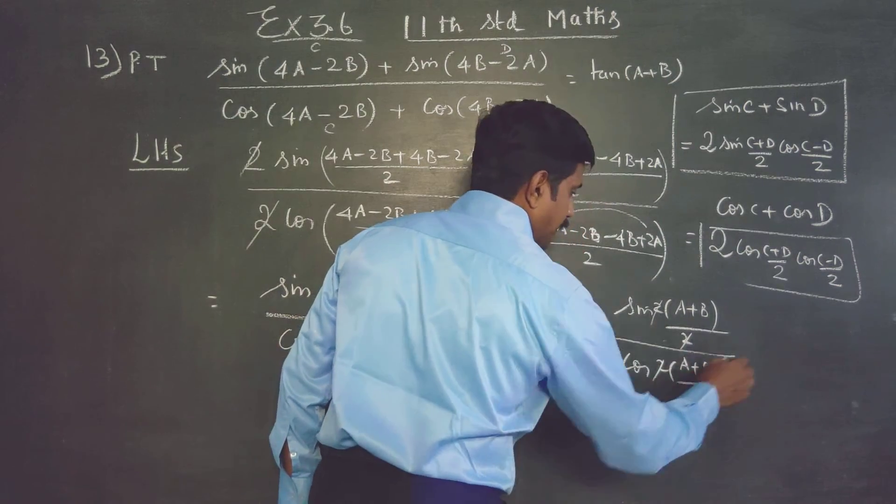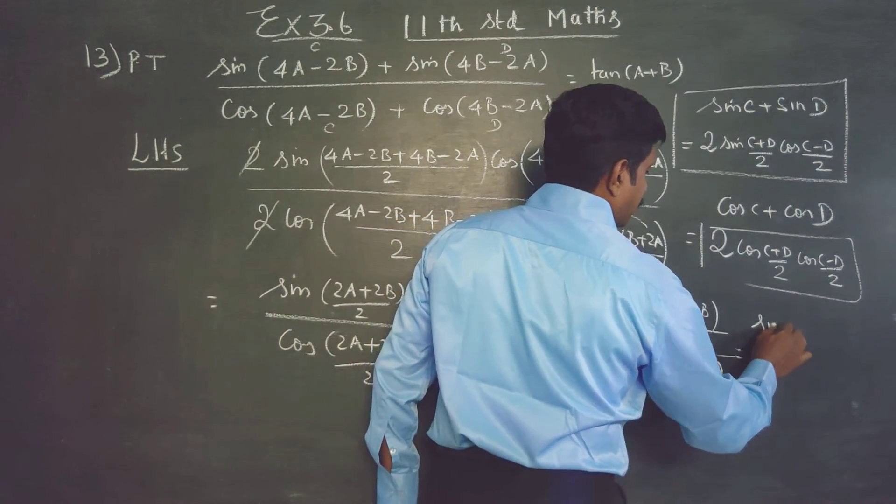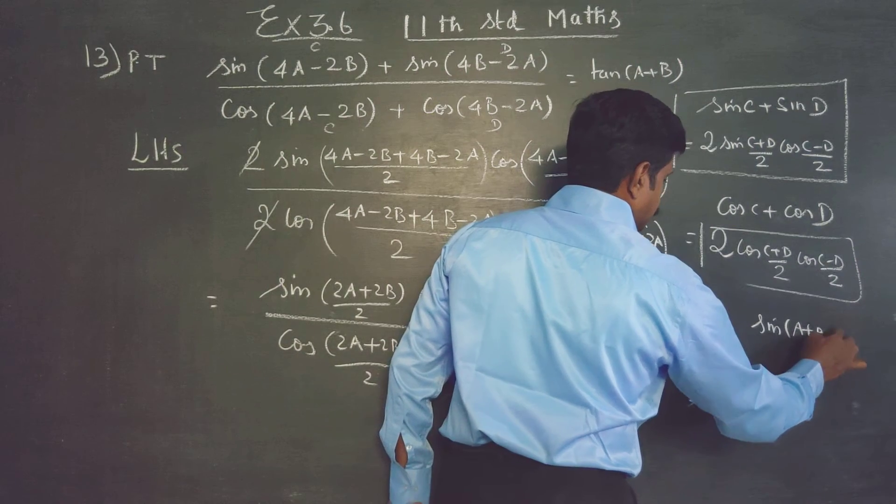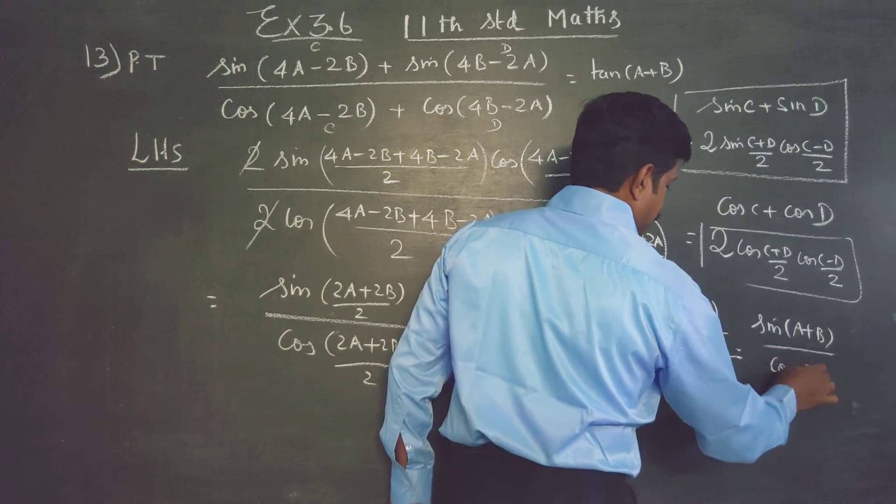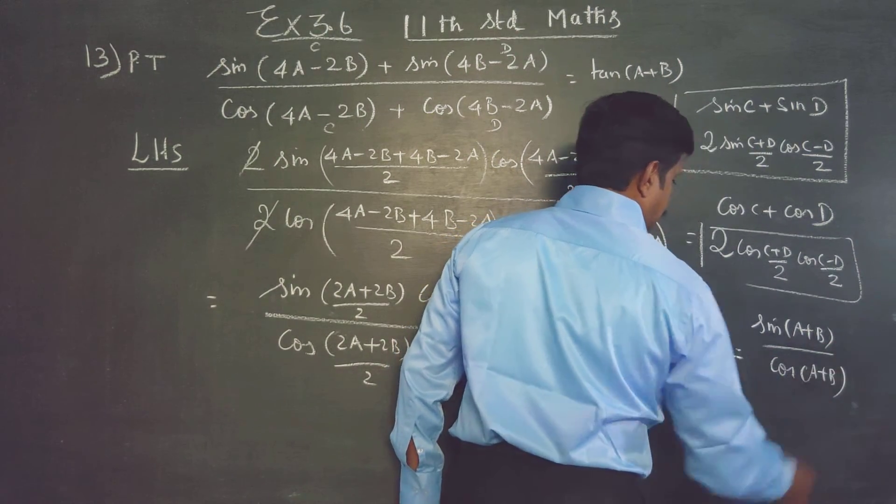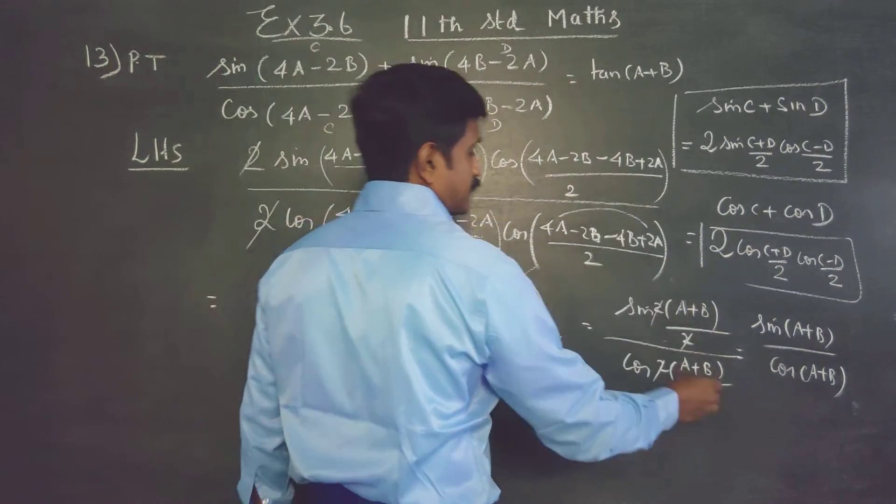By 2, two to cancel out. Therefore, sin a plus b by cos a plus b, answer is tan a plus b.